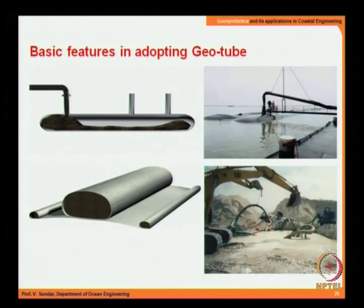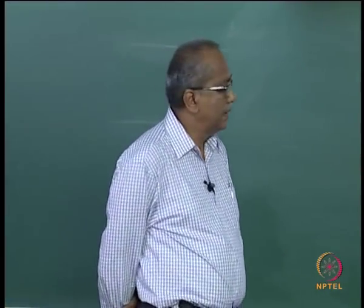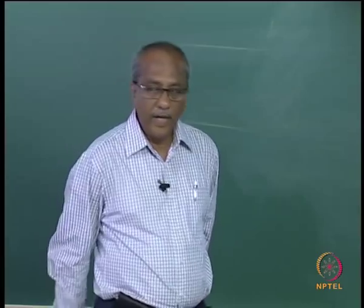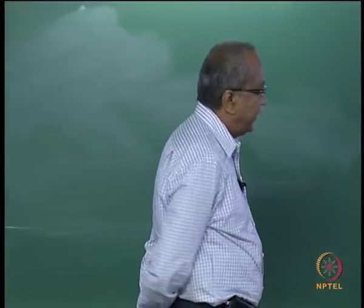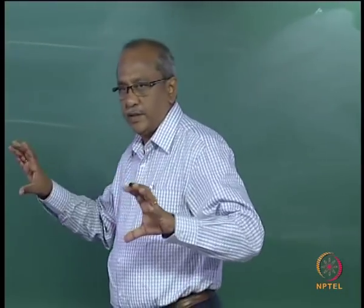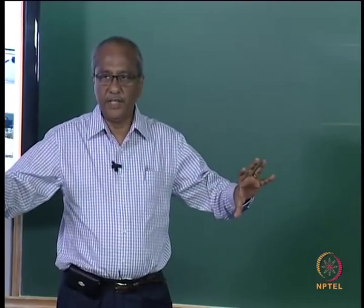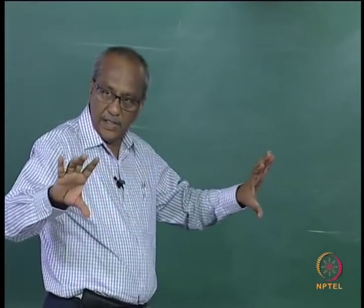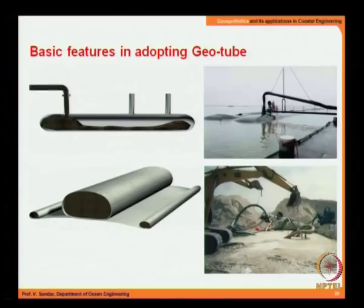The basic features of adopting a geotube: the length can be up to 20 or 30 meters. You may have 2 or 3 pumping points through which you pump sand, and the tube slowly elongates. After filling the full extent, it forms a solid unit and can be retained. Here you can see a geotube being filled in the presence of water, and the same geotube can also be placed over land and filled.